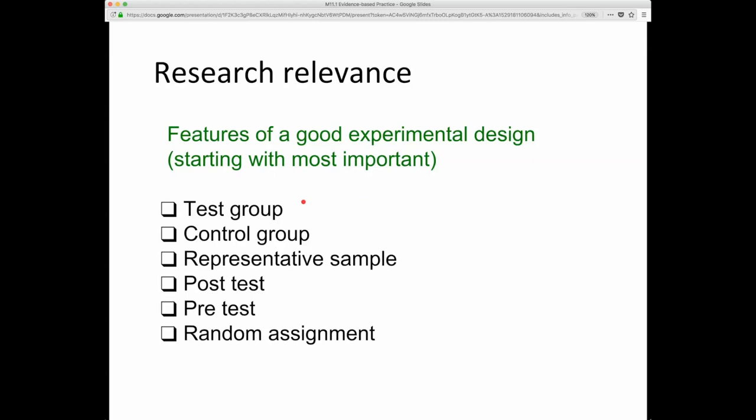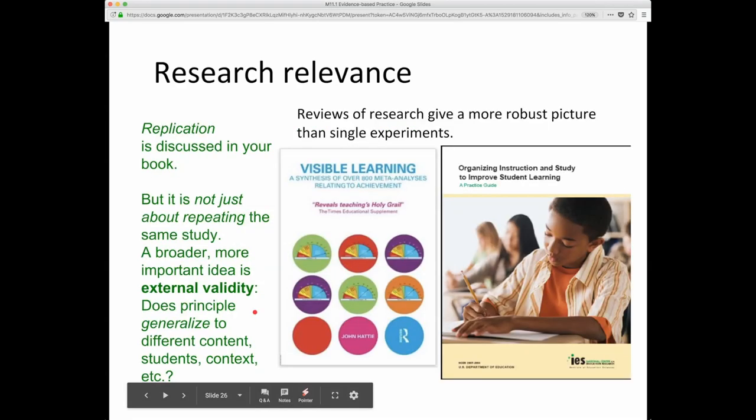So research that is worth looking at usually has some kind of test or treatment group, a control group. It has a sample that's representative of a sample that you care about. It has a post-test as we've shown before, it has random assignment, and ideally it has a pre-test which was not illustrated in what I did before. But a pre-test certainly helps to assure that even if you randomized, there might be differences between the two groups and a pre-test can help determine that.